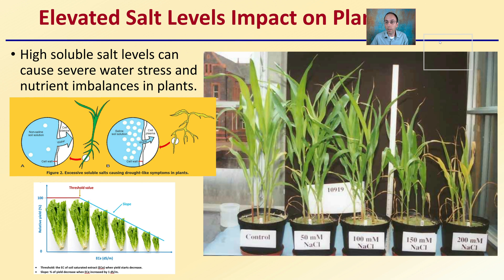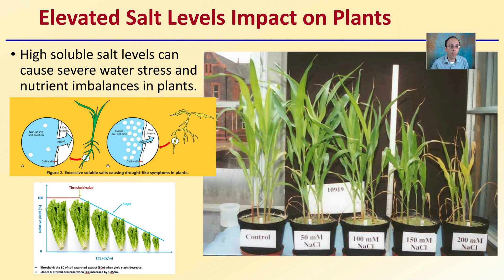So what is the elevated salt level's impact on plants? High soluble salt levels can cause severe water stress and nutrient imbalances in plants. Basically, it causes water to essentially leave the root, causing the plant to dehydrate. There is a certain point where plants can become stunted, yellowed, and have poor root structure — all of which can lead to reduced harvest and yields.